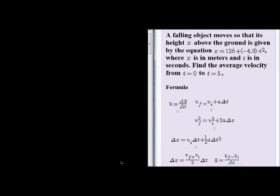Okay, another example of average velocity. A falling object moves so that its height x above the ground is given by the equation x = 126 + (-4.9)t², where x is in meters and t is in seconds. Find the average velocity from t = 0 to t = 5.